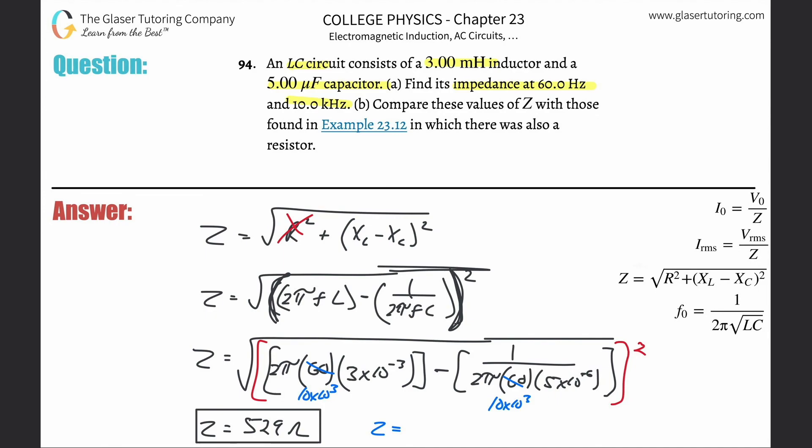So let's do, 2π times then 10 times 10 to the third times 3 times 10 to the minus third. And then subtract now the 1 divided by parenthesis now, 2π times 10 times 10 to the third times then 5 times 10 to the minus sixth. Close those parenthesis.